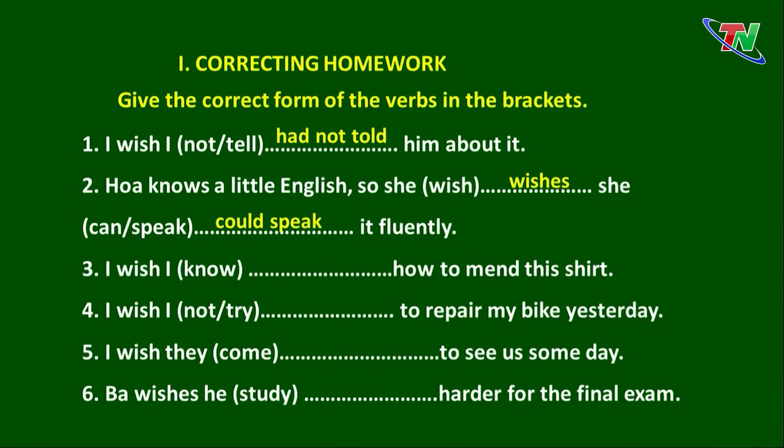Câu số 3: I wish I know how to man this earth. Đây là điều ước ở hiện tại, cô sử dụng 'knew' là quá khứ đơn của 'know'. Đáp án: I wish I knew how to man this earth.